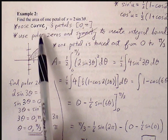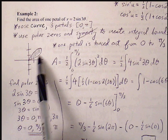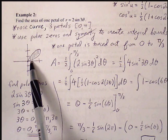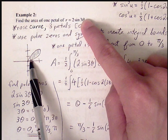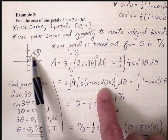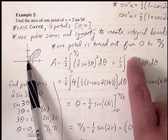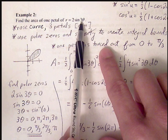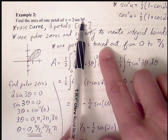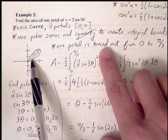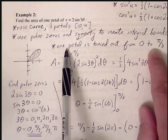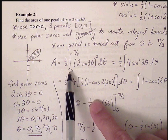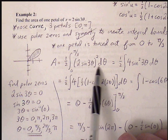When θ = 0, sin(0) = 0, so r = 0. The next polar zero occurs at θ = π/3: plugging in π/3 gives sin(3 · π/3) = sin(π) = 0, so r = 0 again. Therefore one petal is traced out from 0 to π/3. This gives our integral bounds. The area is (1/2) times the integral from 0 to π/3 of r² dθ, where r = 2sin(3θ).